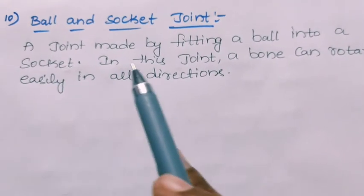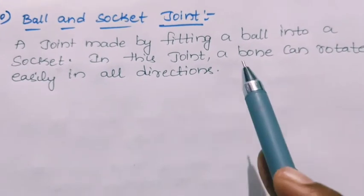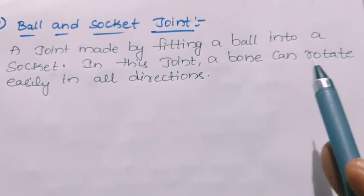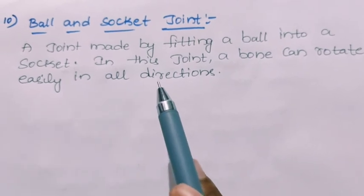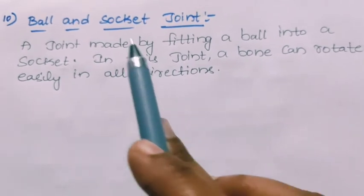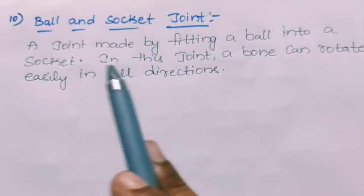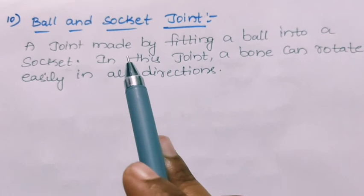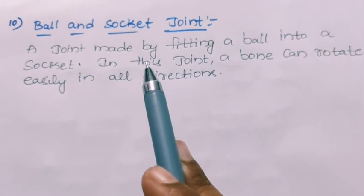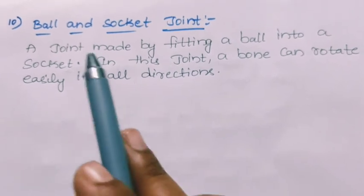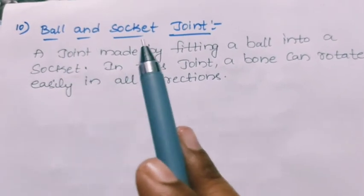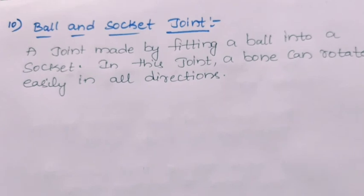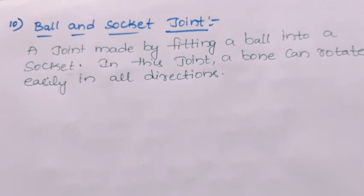In a ball and socket joint, a bone can rotate easily in all directions. This joint is present at the shoulder bone and also at the legs. That is the ball and socket joint. Thank you, children.